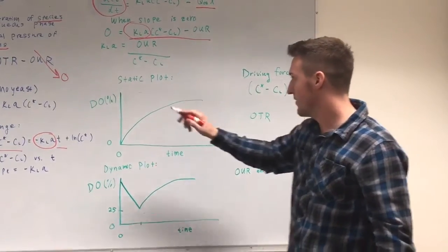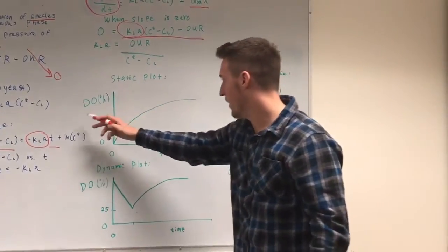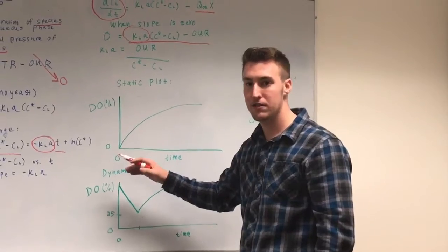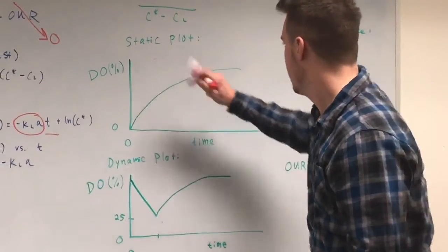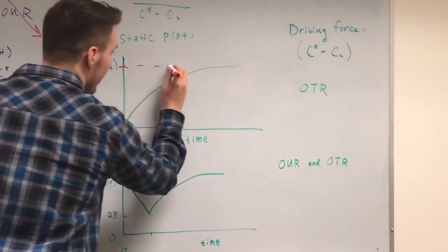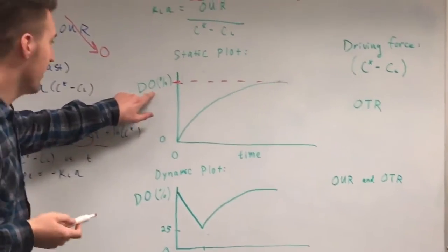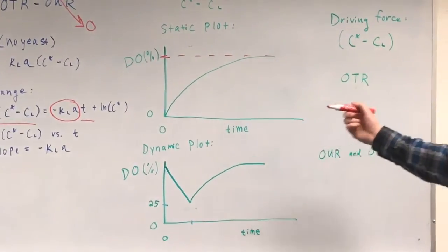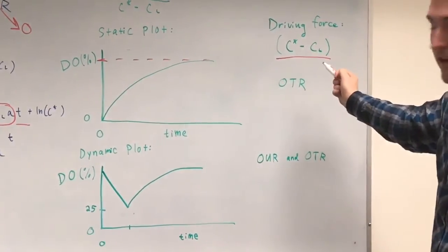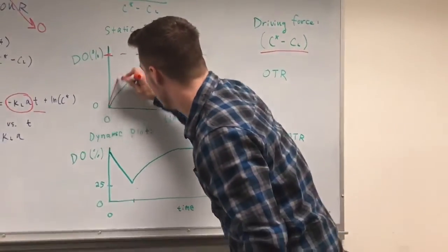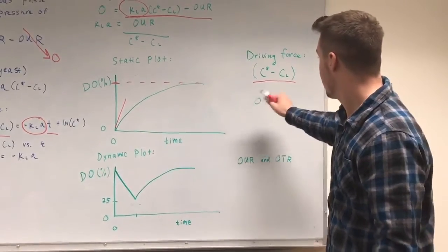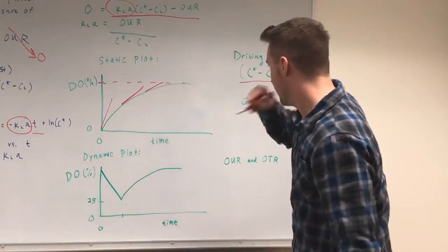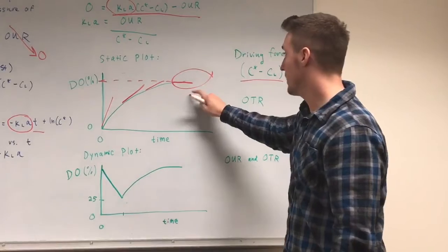It helps to compare the equations to what the plots actually look like. For the static method, dissolved oxygen versus time starts at zero — no oxygen in the system — and increases until it reaches the maximum dissolved oxygen percentage. Because the driving force is C* minus CL, the slope is initially high but decreases as you approach maximum concentration, eventually flatlining at the stable value.